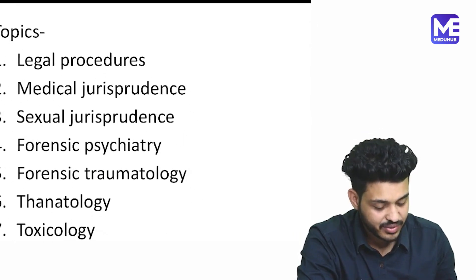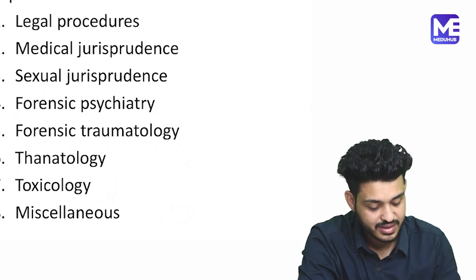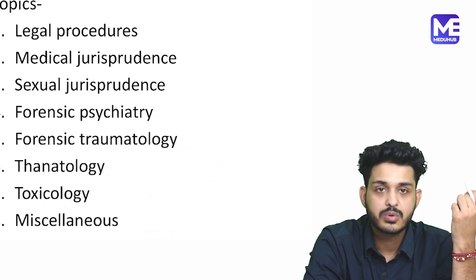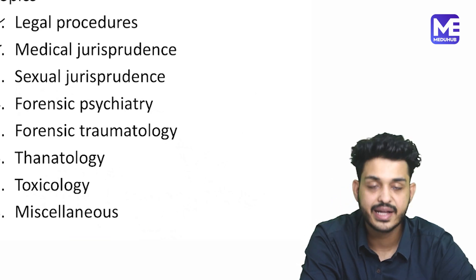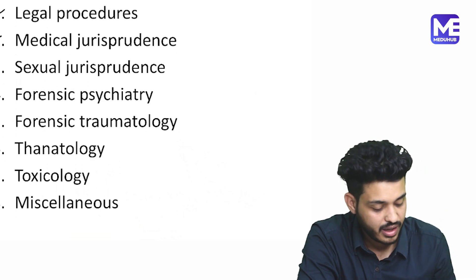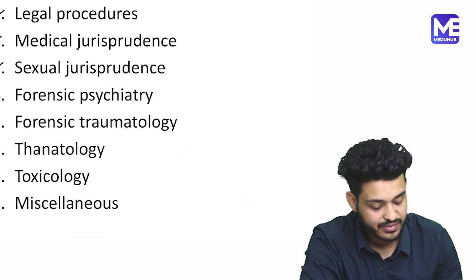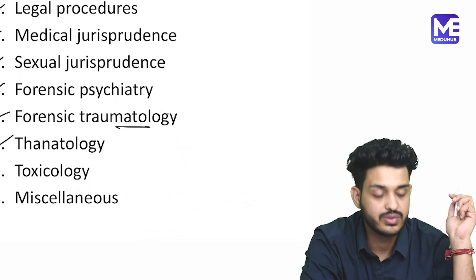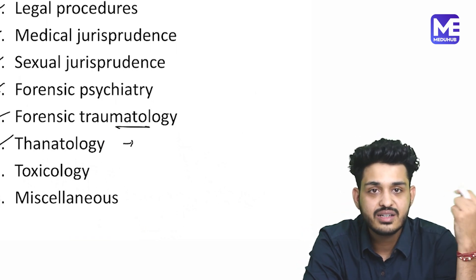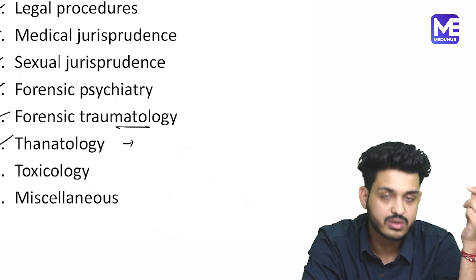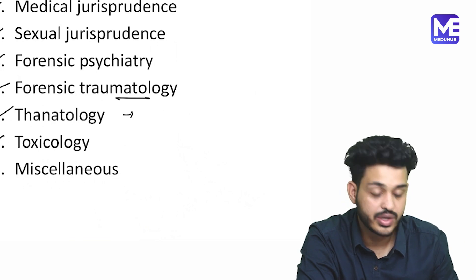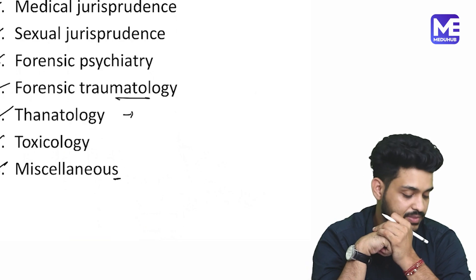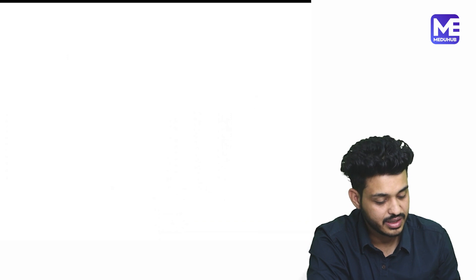Now the topics we are going to cover in forensic medicine and toxicology over the next few sessions: topic one will be legal procedures; then medical jurisprudence; third, sexual jurisprudence; then forensic psychiatry; then traumatology — all the trauma part; then thanatology, which is the study of death, including postmortem and antemortem changes; and finally toxicology and miscellaneous topics. That is the scheme of the class, and we will start our lecture with topic number one.